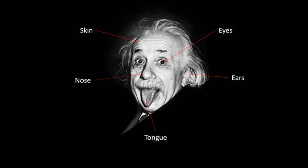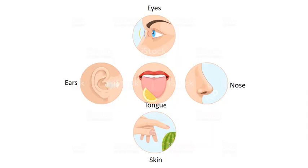skin which is used to feel. So, in total we have 5 sense organs. Today we will focus on one of these organs, the nose, which is used for smelling.